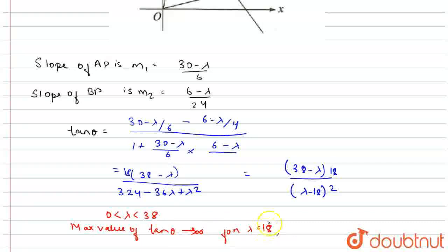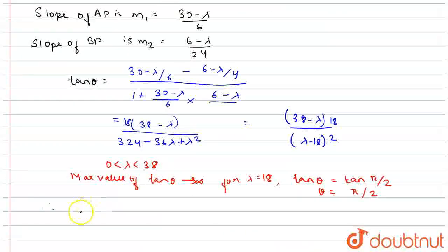That means tan theta equals tan pi by 2, so theta is equal to pi by 2. Therefore, the answer pi by 2 is the correct answer.